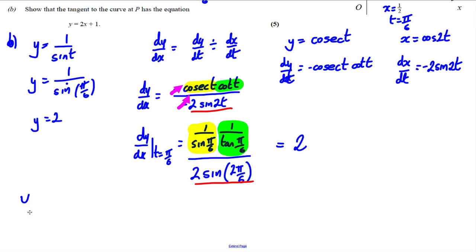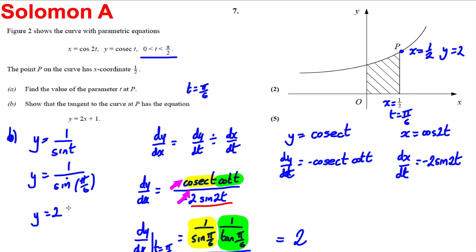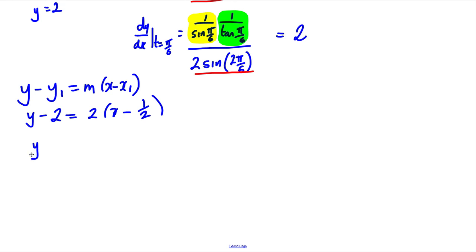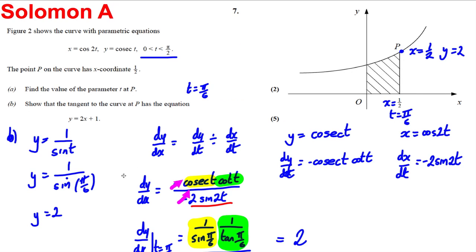So that's the gradient and we're going to use y subtract y1 is m x subtract x1. So y subtract 2 is going to be 2x subtract 1 half. So y subtract 2 is 2x subtract 1. Add 2 to both sides. y is equal to 2x plus 1. And that is exactly what you were looking for in the question.